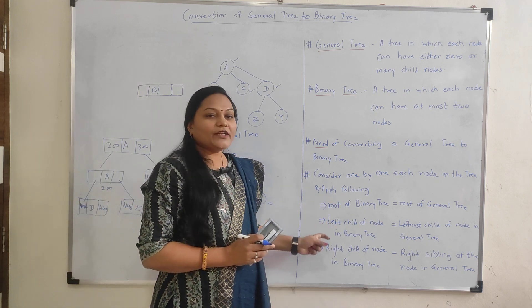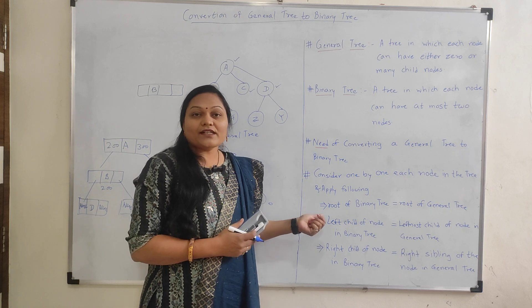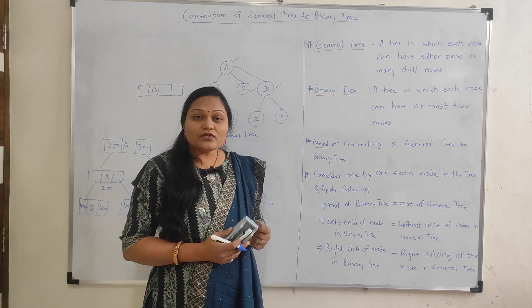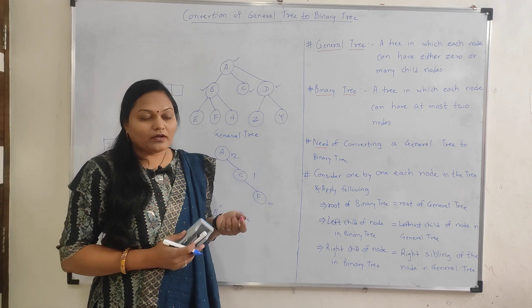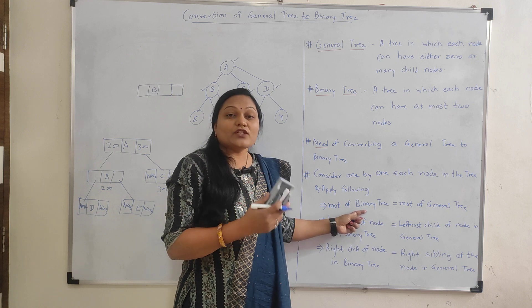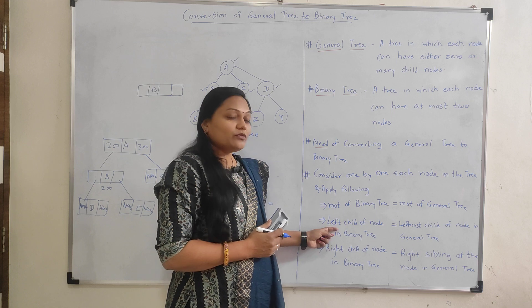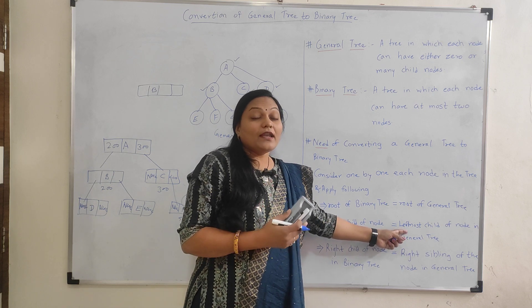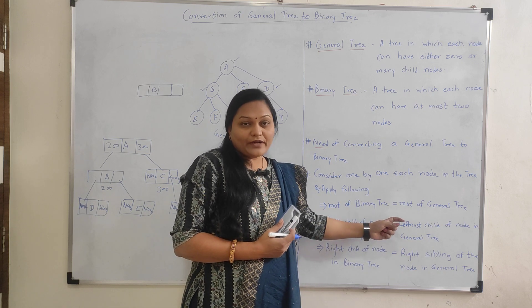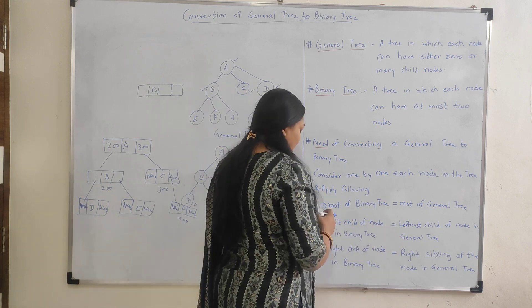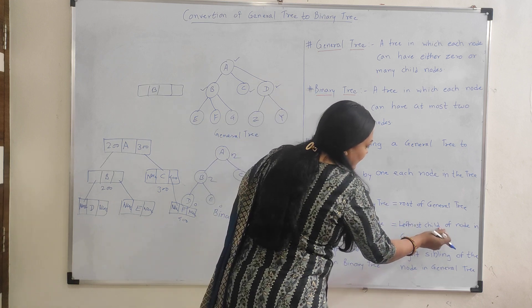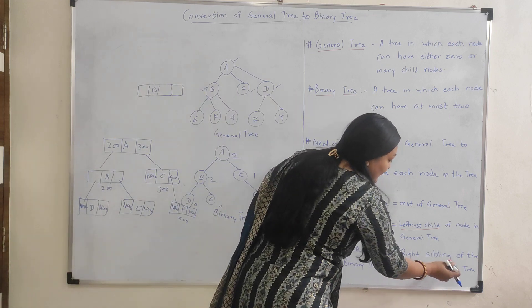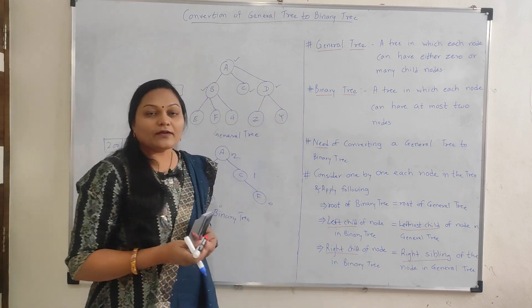Now let's see how to convert a general tree into a binary tree. We consider all nodes one by one. If the node is a root node, it remains the root node in the binary tree. If it is not a root node, two rules apply: the leftmost child of the node in the general tree becomes the left child in the binary tree, and the right sibling in the general tree becomes the right child in the binary tree.